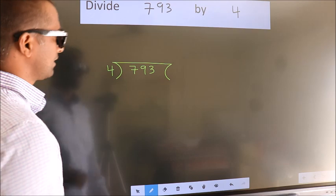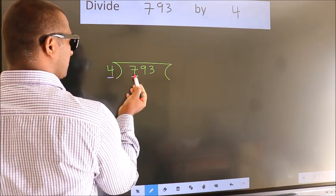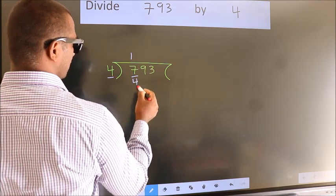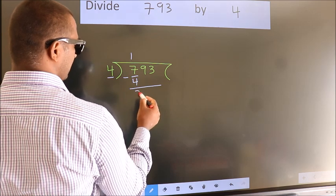Next, here we have 7, here 4. A number close to 7 in 4 table is 4 ones, which is 4. Now we should subtract, we get 3.